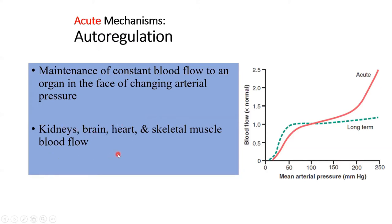Starting with autoregulation - as the name indicates, various organs are famous for regulating their own blood flow. They don't need a lot of external nervous system or hormonal input; they are masters of their own blood flow destiny. A graph shows autoregulation by plotting mean arterial pressure, the feeding pressure, against blood flow changes in an organ.